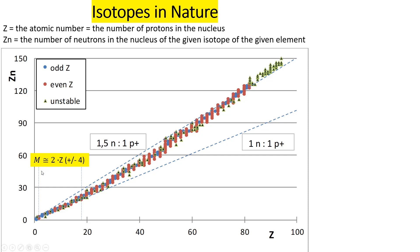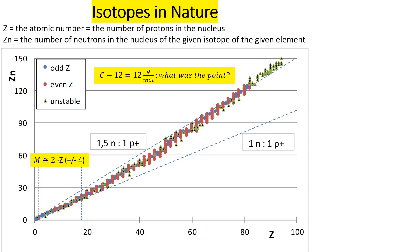In this region we can approximate the atomic mass as double the atomic number, with plus or minus four. If we increase the atomic number above roughly 20, this rule breaks and the ratio increases to about one-and-a-half neutrons to one proton at an atomic number around 80. So the rule that the number of neutrons equals the number of protons is generally not true.